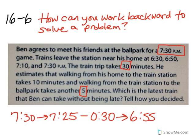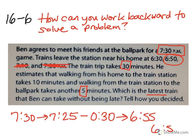The 7:30pm train would be much too late since the game is starting at that time, so we can eliminate that. The 7:10pm train won't give him enough time since he needs to be on the train by 6:55pm. Working backward, the 6:50pm train is definitely a possibility. The 6:30pm train would give him even more time. But remember, the question is: what is the latest train that Ben can take without being late? If he takes the 6:50pm train, that should allow him enough time to get there.